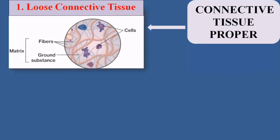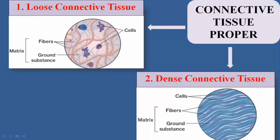Connective tissue proper is of two types. The first is loose connective tissue. As the name indicates, loose connective tissue is composed of less fibers, as you can see in the diagram. It has more ground substances in the matrix and more cells inside the tissue. So less fibers and more ground substances characterize loose connective tissue.